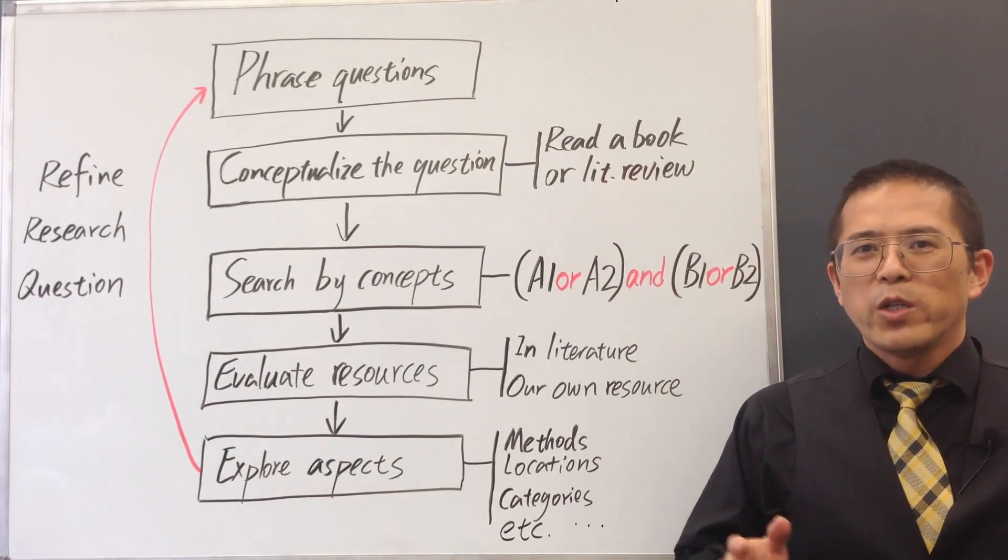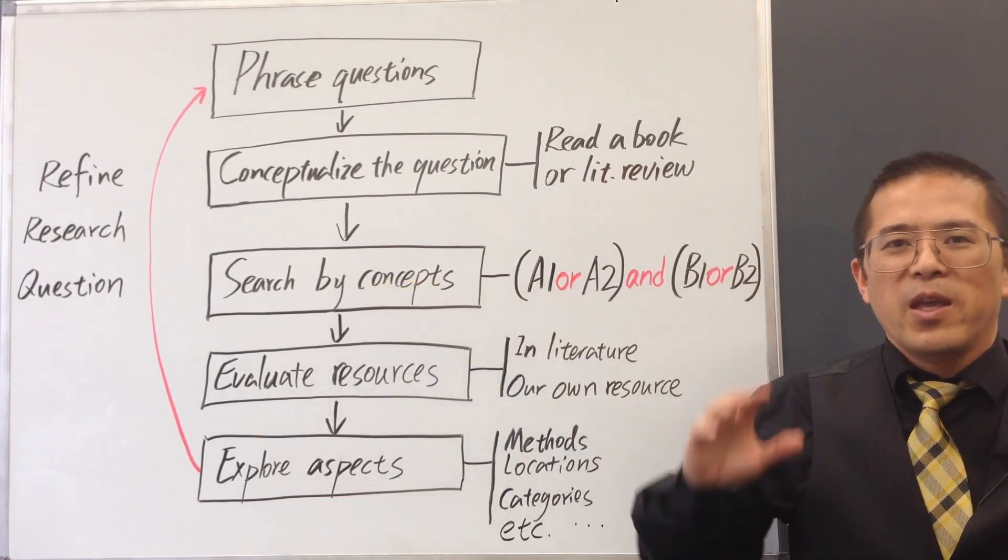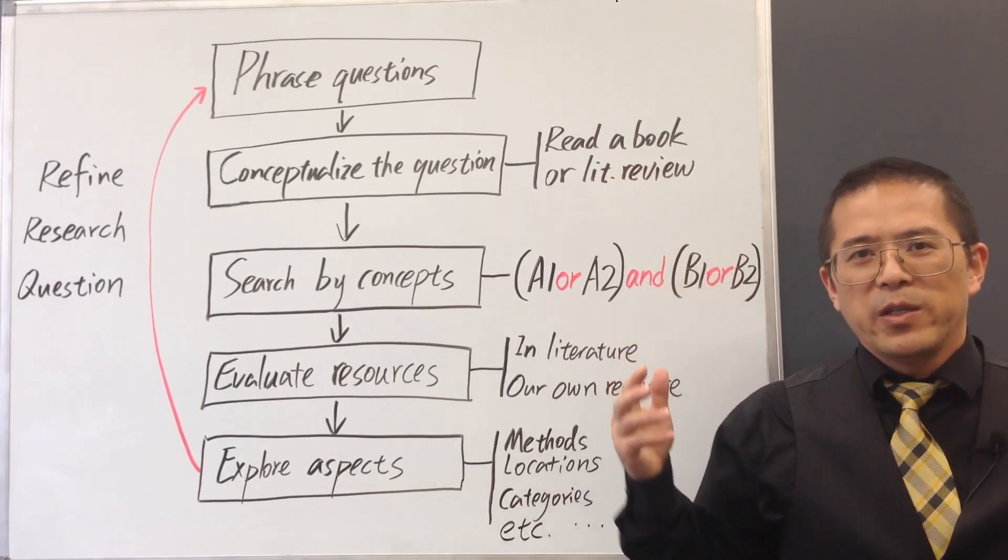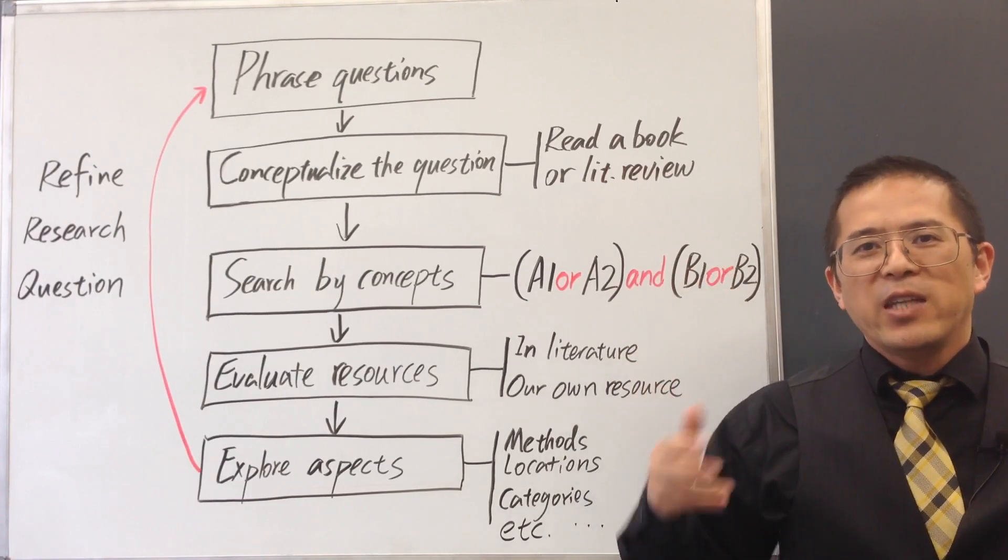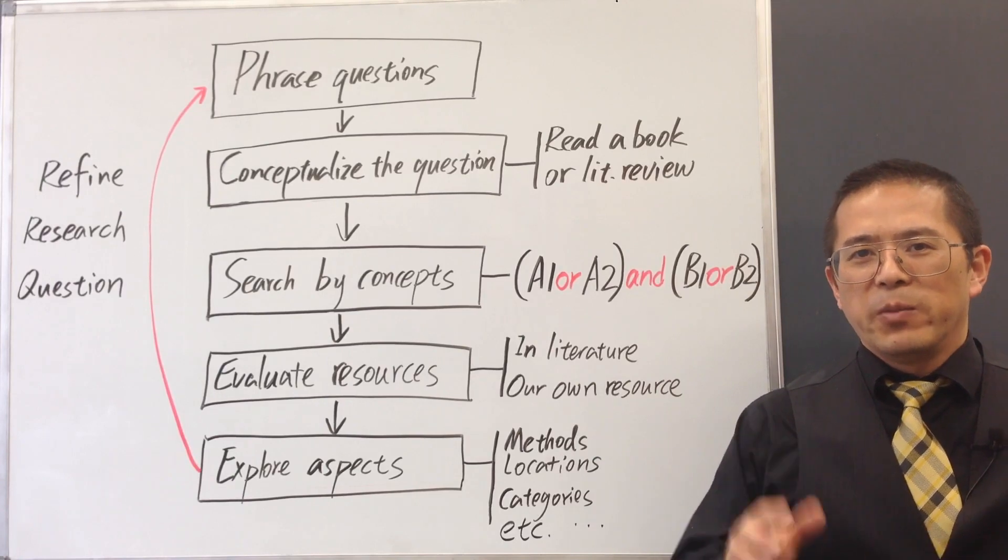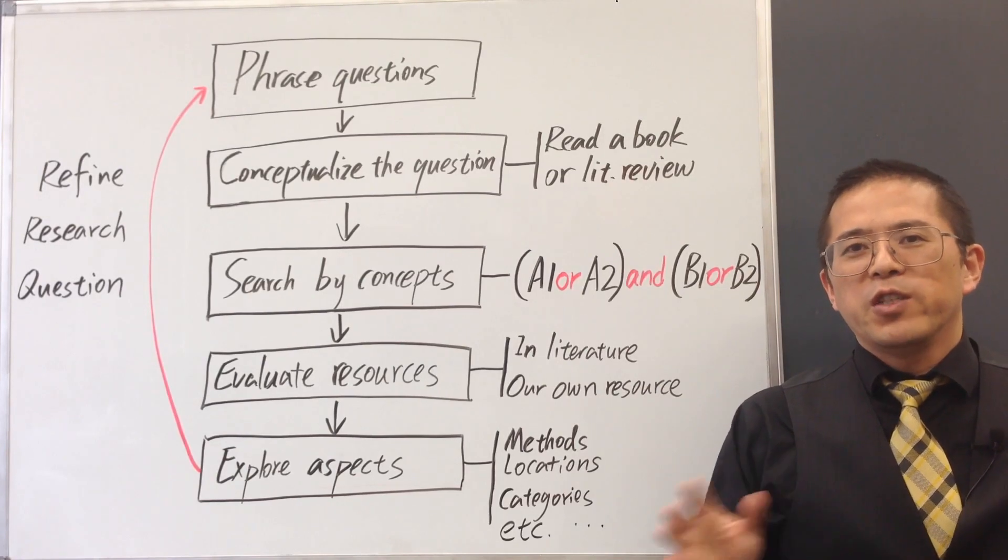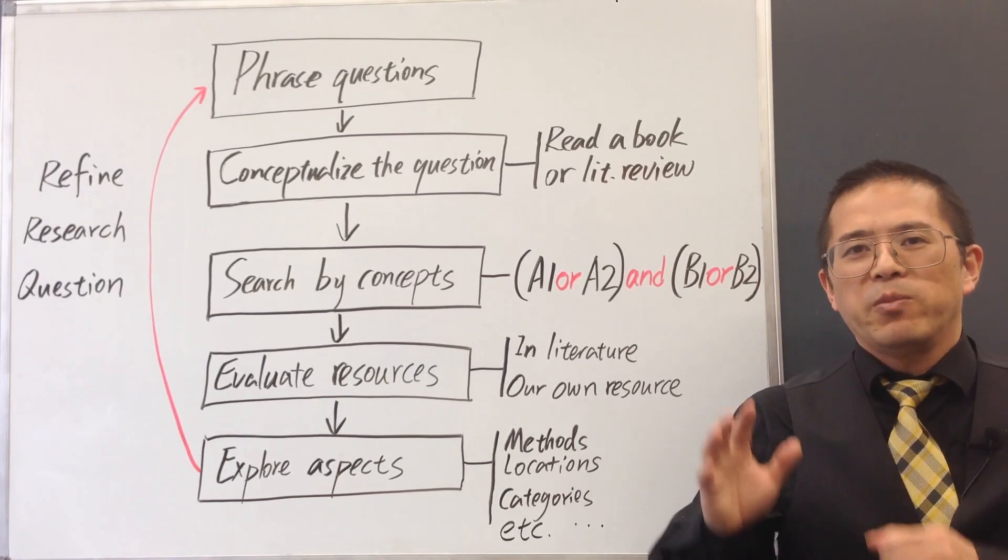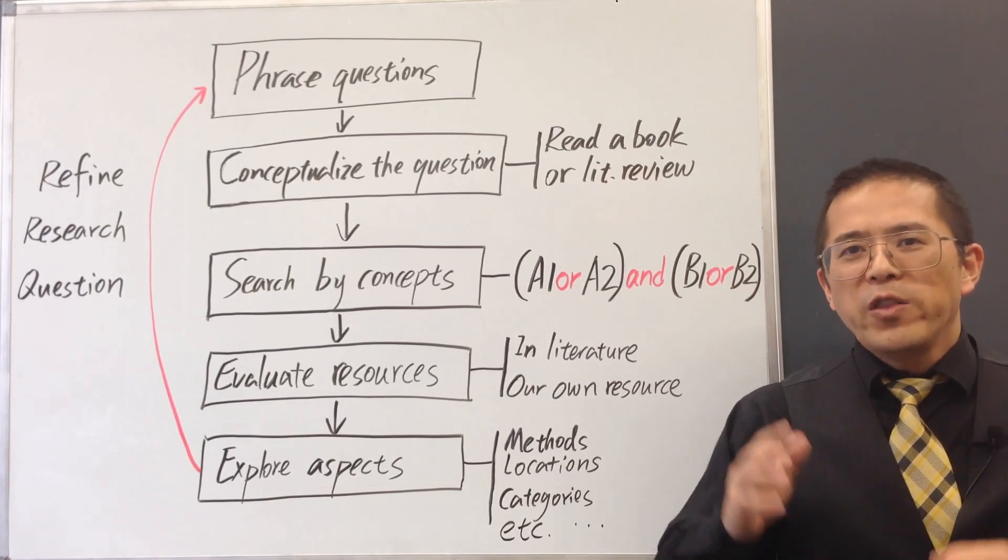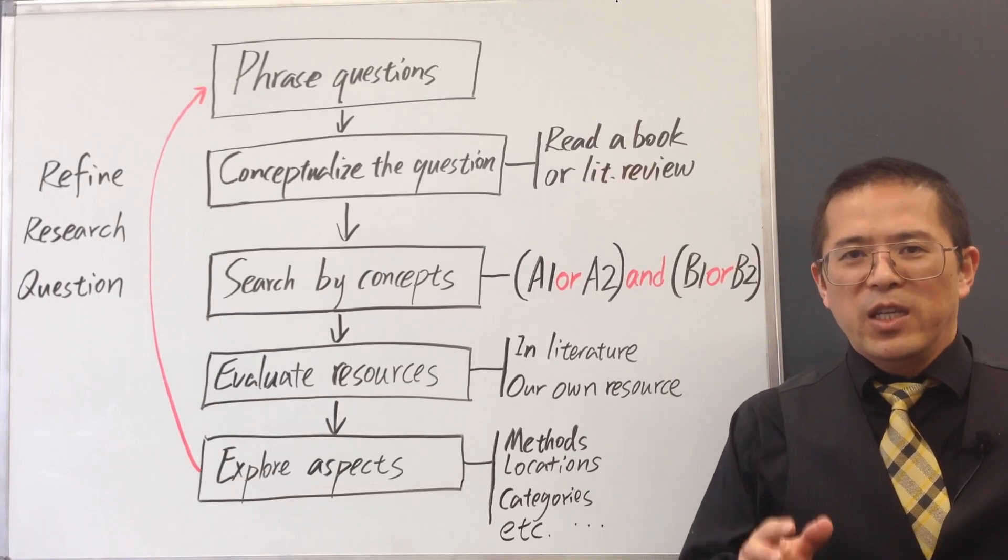Next, we want to go deep by running literature search by these concepts. As we identify the key concepts, we want to brainstorm synonyms and related concepts. We need to be careful when dealing with terminology and nomenclature. Sometimes different researchers use different languages to describe the same concepts.